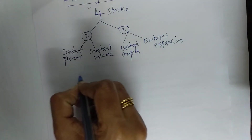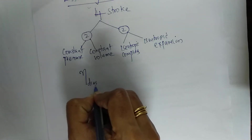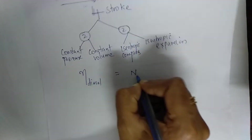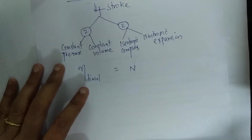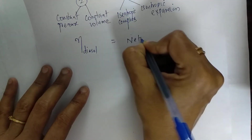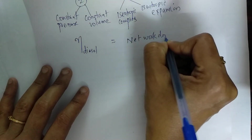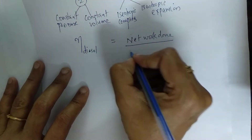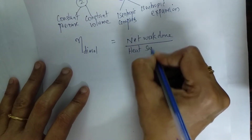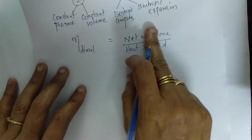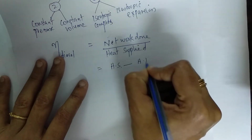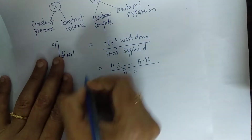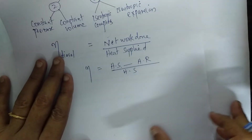Efficiency is denoted by eta. For the diesel cycle, efficiency is the net work done divided by the heat energy supplied to the system. Net work done is the difference between heat energy supplied and heat energy rejected: (Q1 - Q2) / Q1.